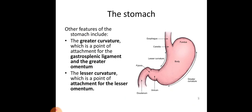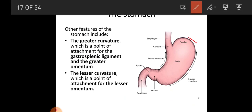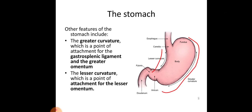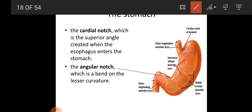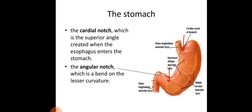The stomach has two curvatures. The greater curvature is the point of attachment of the gastrosplenic ligament and the greater omentum. The lesser curvature gives attachment to the lesser omentum. There are also two notches: the cardiac notch, which is the superior angle created by the esophagus at entry into the stomach, and the angular notch, which is a bend on the lesser curvature of the stomach.